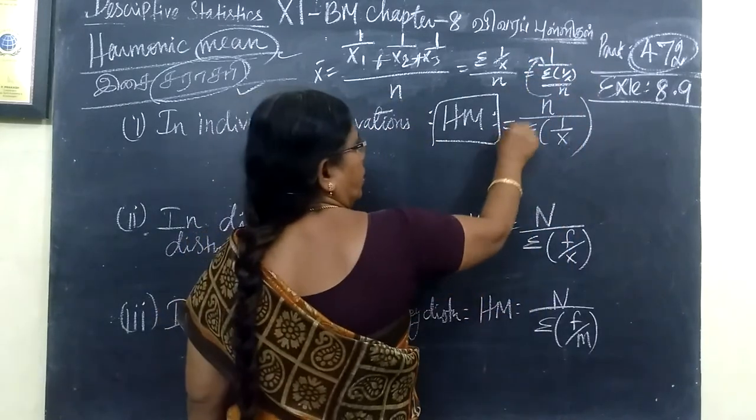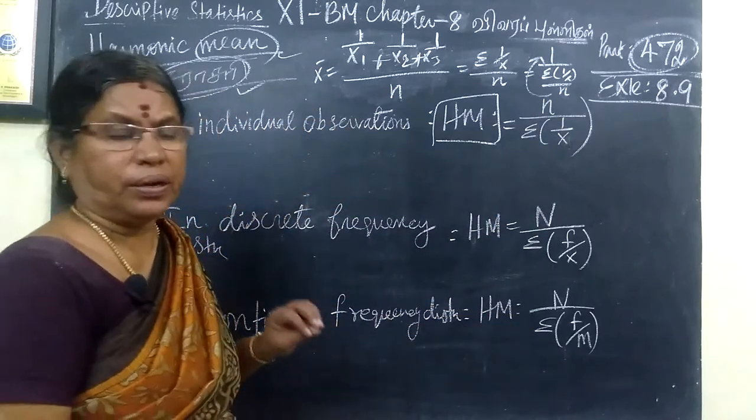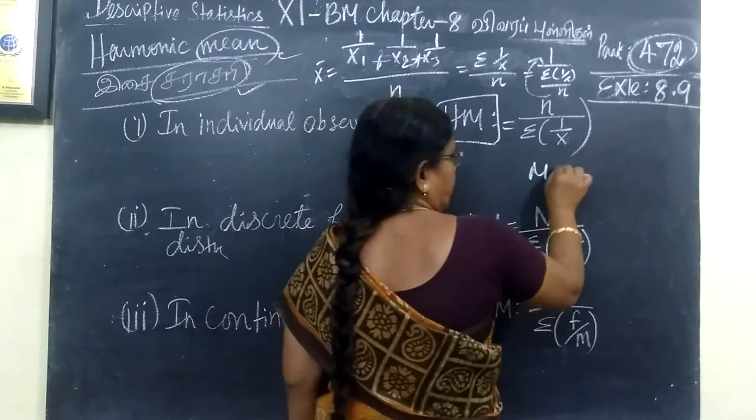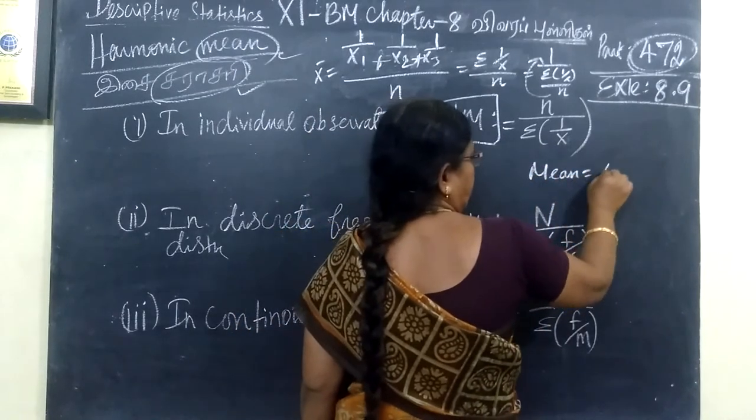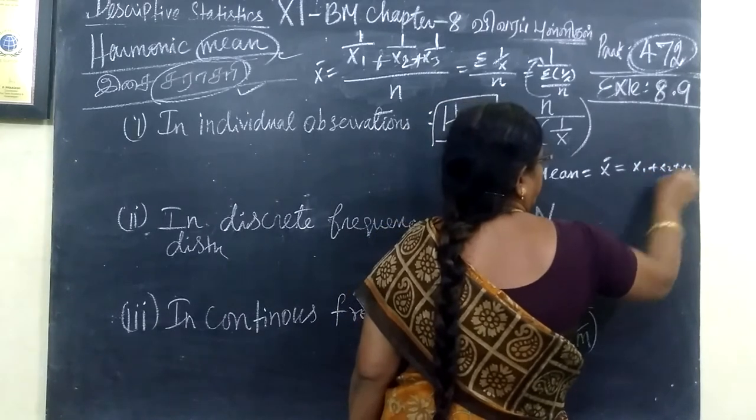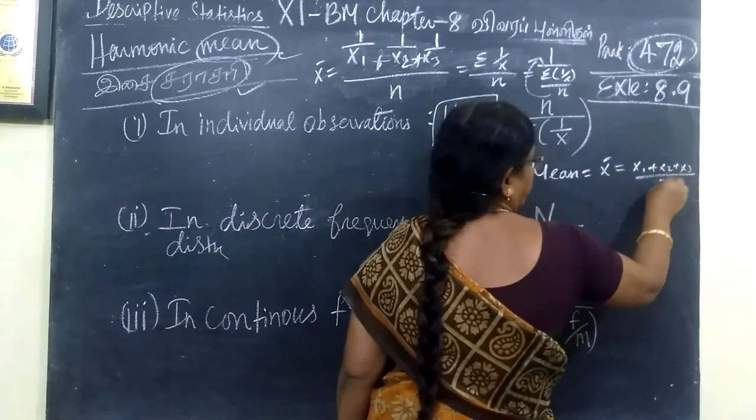So you are getting n by sigma of 1 by x. Hope you understand. Now mean: x bar means x1 plus x2 plus x3 divided by n. Three observations.